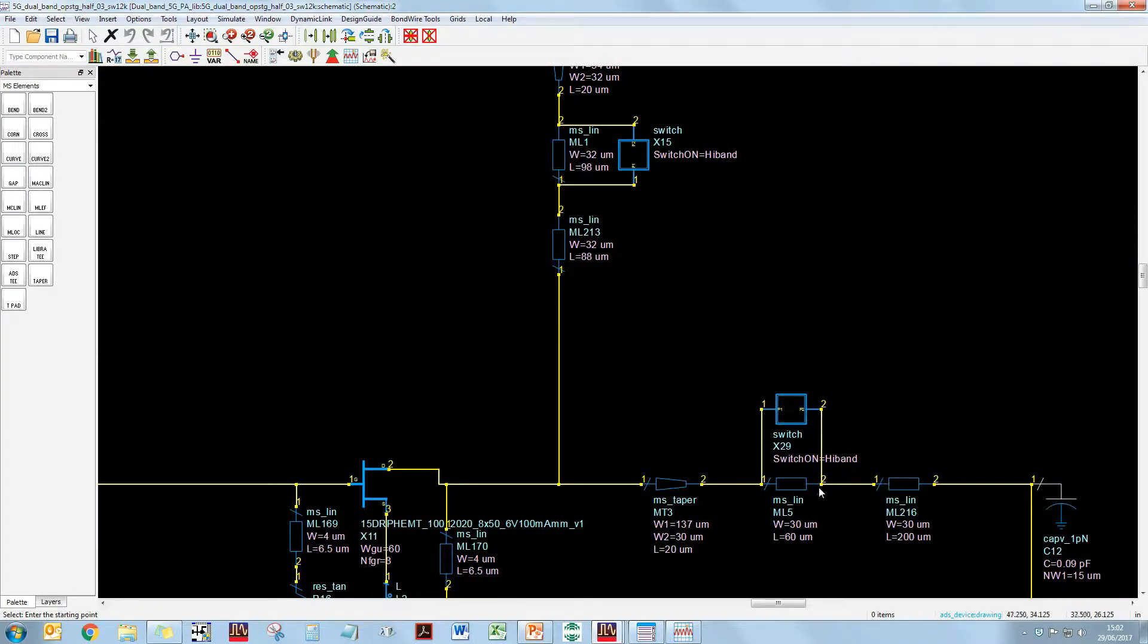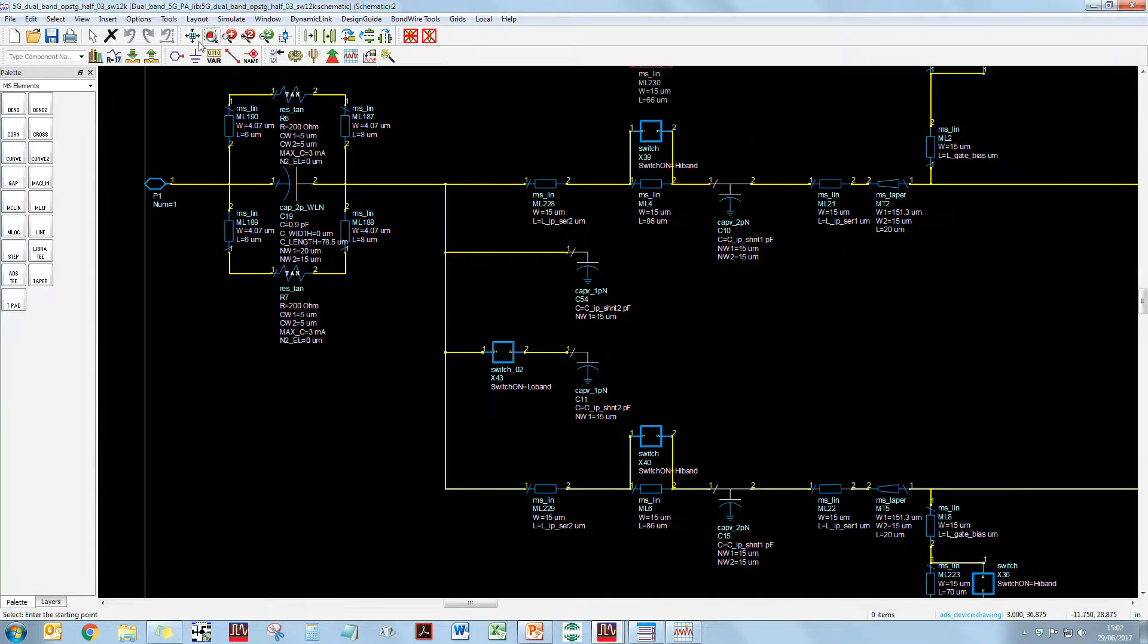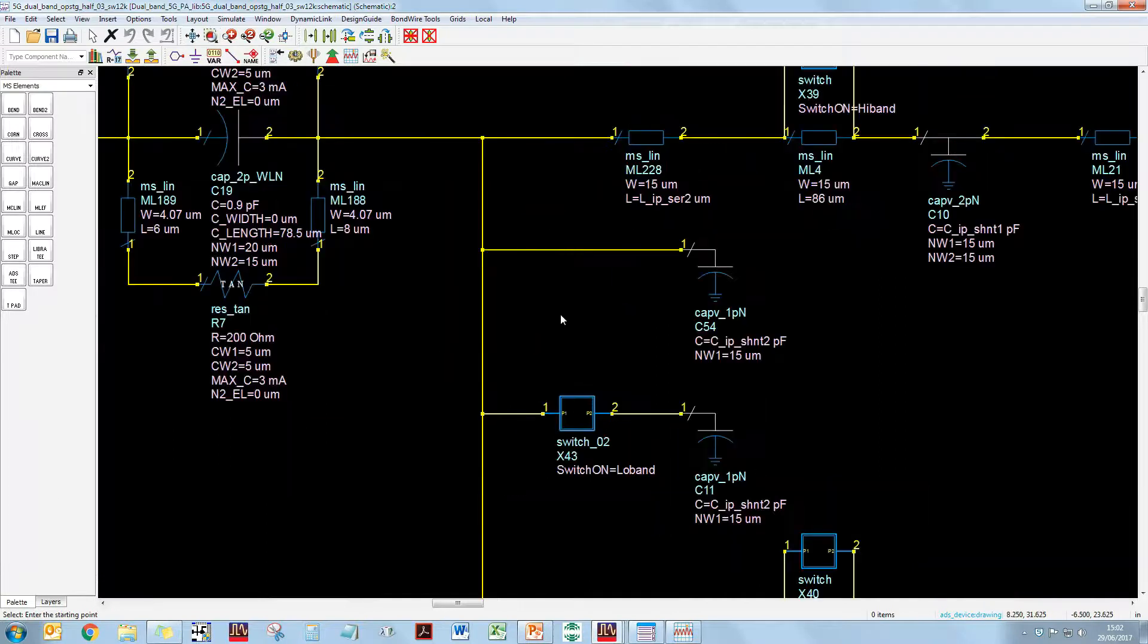This transmission line over here, which is part of the output matching network, is also altered in a similar way using a similar switch. So, that's the case of transmission lines, which are preferable over inductors for millimetre wave. Let's look at how we can use these switches to alter capacitances. So, we've got some capacitance on this net. This one is fixed here, and as you can see, this one is being altered by the use of this switch here. So, when this is on, as for the case of low band, then the capacitance on this net is highest. And when this is off, as for the case of high band, the capacitance on this net is lowest.